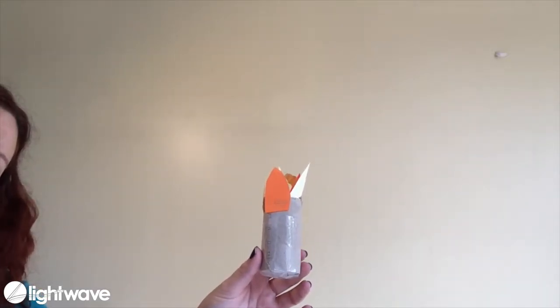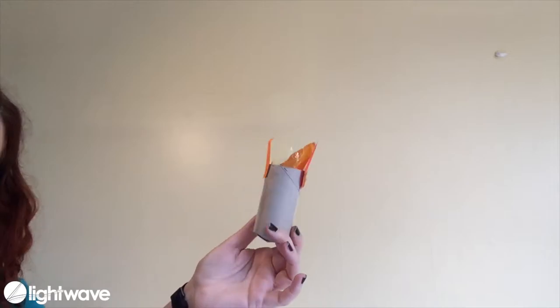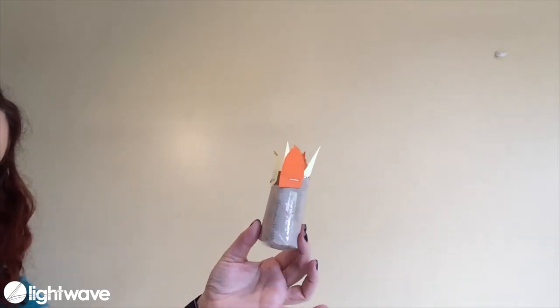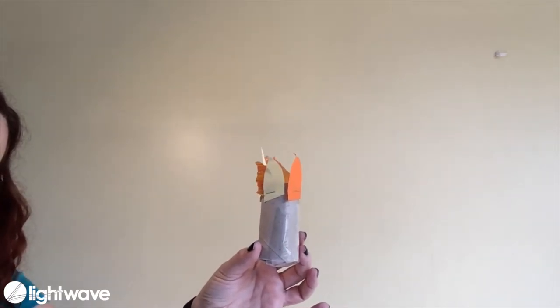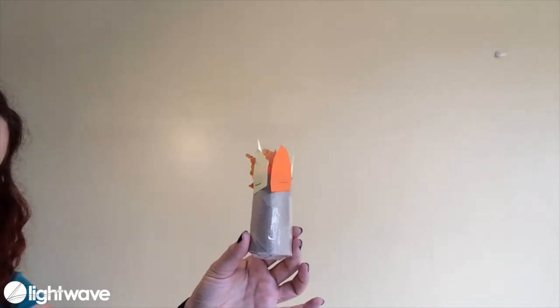For today's activity we're going to make a fiery furnace. It was this that Shadrach, Meshach and Abednego were thrown into when they refused to worship the golden statue that King Nebuchadnezzar had made.